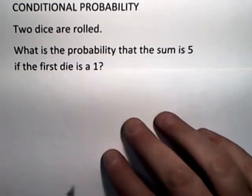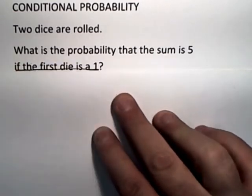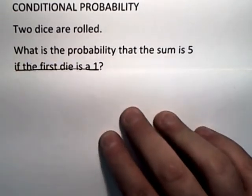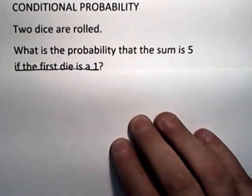Now, when they say if the first die is a 1, that's the condition. So you immediately know that this is a conditional probability problem, even if it weren't labeled that way already.